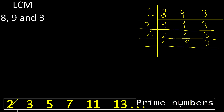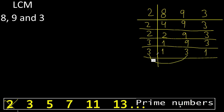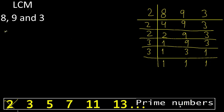1 cannot be divided by 2, so we divide by 3. 1 cannot be divided by 3, so it stays equal. 9 divided by 3 is 3, and 3 divided by 3 is 1. 3 divided by 3 is 1. All values are equal — 1, 1, 1. Finish.